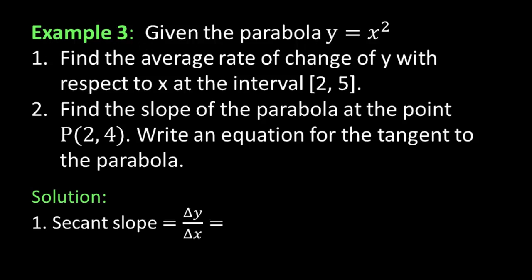Here's a given example. We're talking about the average — we're going to be asked to find the average rate of change. Here it's no longer a free-falling object, but it's a function value. It's a function with a curve. So given the function, which is a parabola, y is equal to x squared, find the average rate of change of y with respect to x over an interval from 2 to 5.